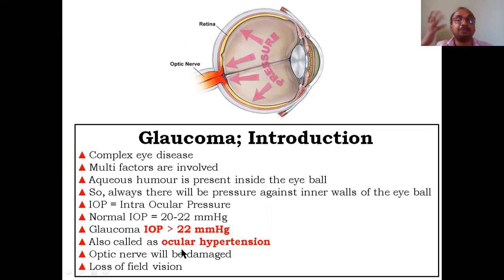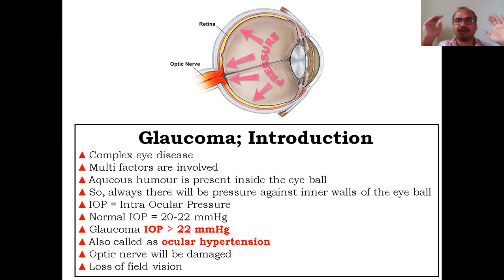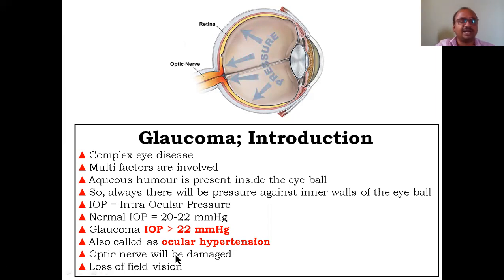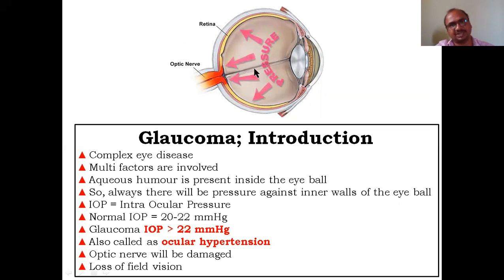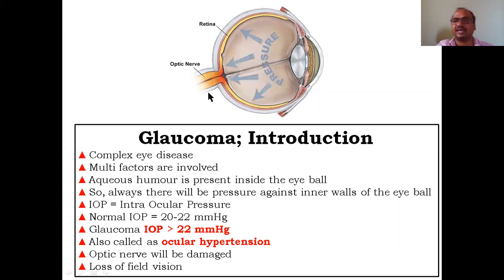This elevated IOP is also called ocular hypertension — just like blood pressure hypertension, where 120/80 is normal. When IOP exceeds 22 mmHg, we call it ocular hypertension. When there is high pressure, see the red color here — this is the optic nerve becoming red. High pressure is a dangerous situation, and this optic nerve will be damaged.